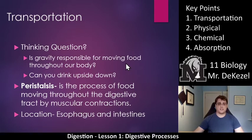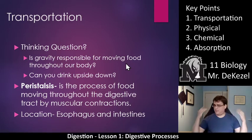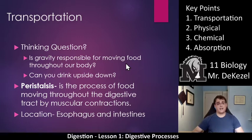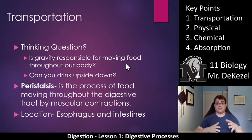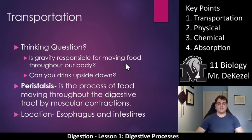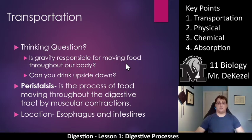The first process is transportation. Is gravity responsible for moving food throughout our body? Can we drink upside down? Gravity definitely plays a role — that's why our mouths are near the top of our body. But you can drink upside down if you're standing on your head. The reason for that is peristalsis. Peristalsis is the process of food moving through the digestive tract by muscular contractions. Once food goes into your esophagus, the esophagus contracts and starts to squeeze that food down. The muscles squeeze to push it along through the esophagus and intestines. That is why food is able to be pushed forward, and peristalsis is what's responsible for transportation.